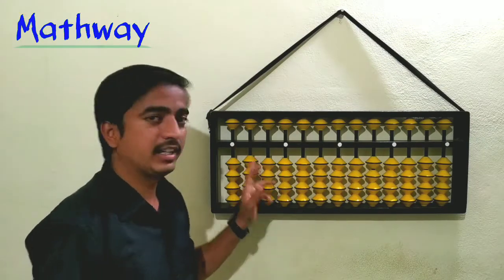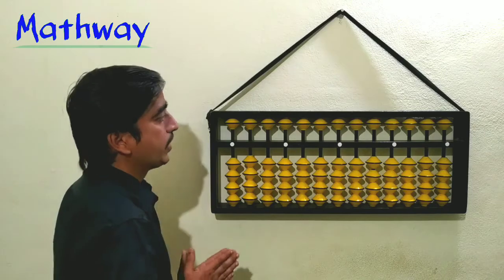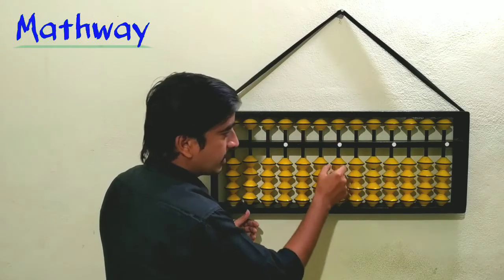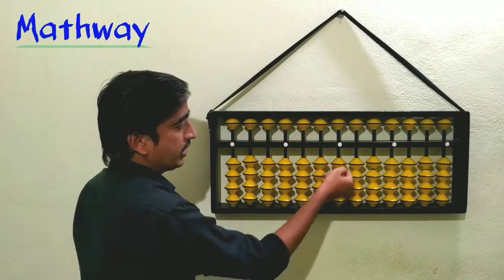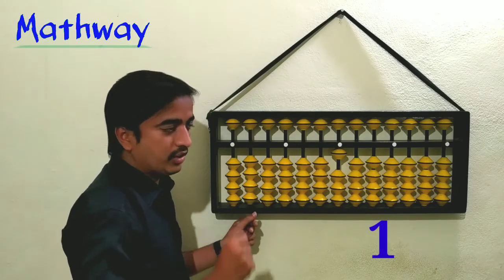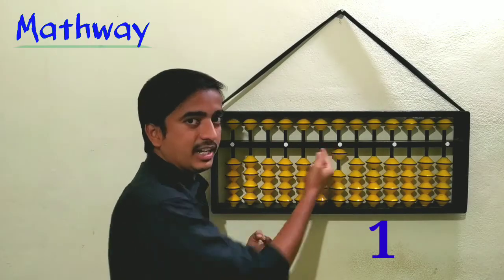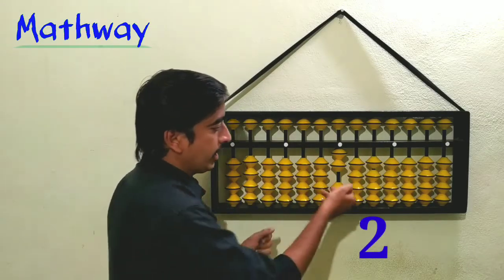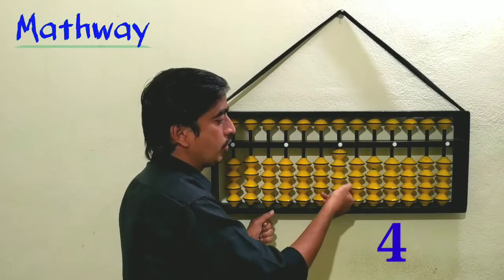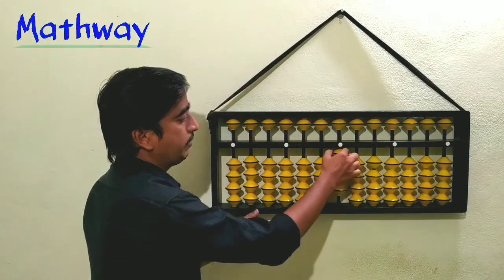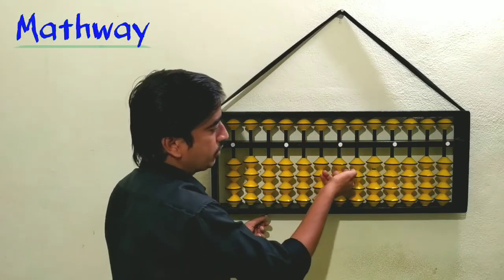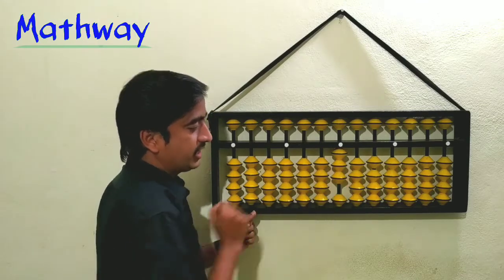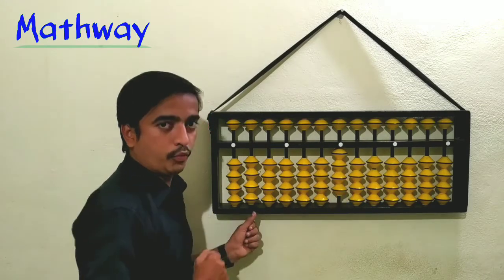If there is no bead touching the answer line, the value represented is zero. Next, considering the middle dot as the ones place — if one lower bead is in touch with the answer line, that is one. If two beads are in touch with the answer line, that is two. Three beads is three, and four beads is four. Simply, however many lower beads are touching the answer line, that is the value.